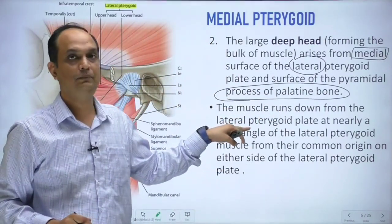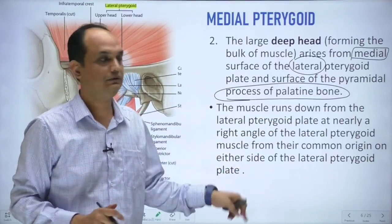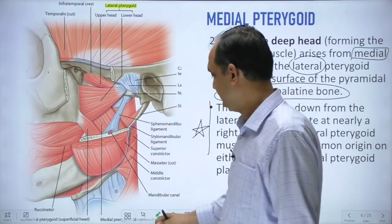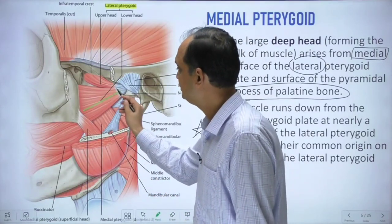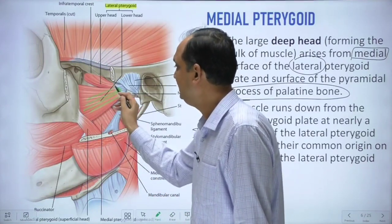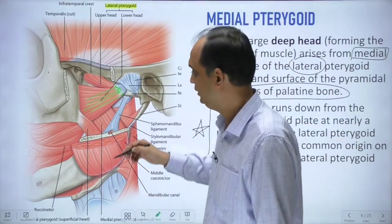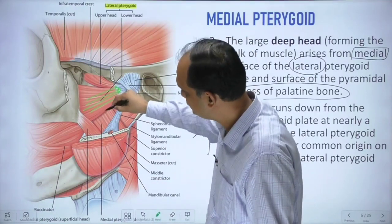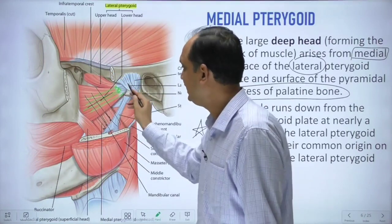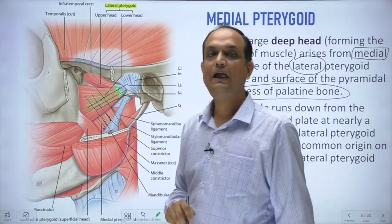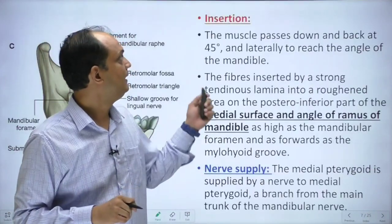Along with the adjacent part of the palatine bone, the muscle runs downward from the lateral pterygoid plate at nearly a right angle to the lateral pterygoid muscle. This is an important anatomical feature - the fiber direction of the medial pterygoid is almost at a right angle to that of the lateral pterygoid, and understanding this pattern is key to understanding the actions of these two muscles.